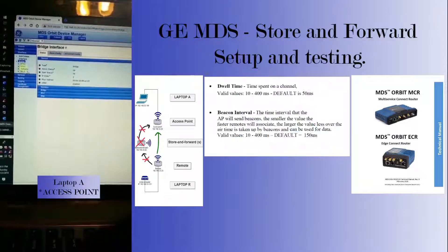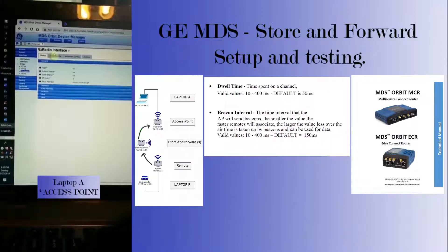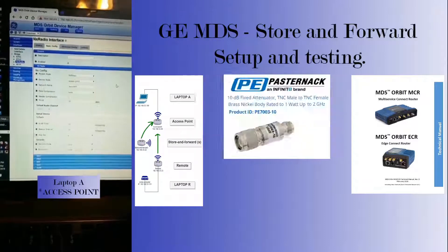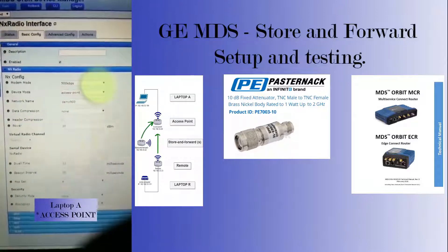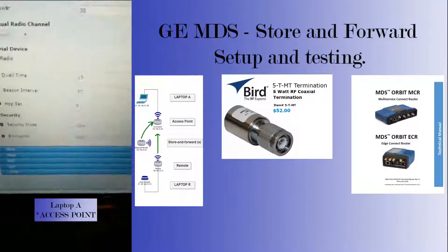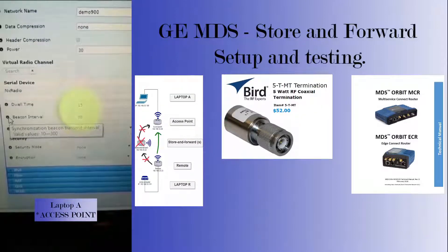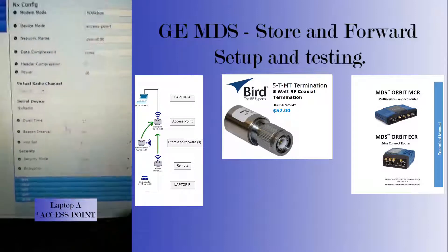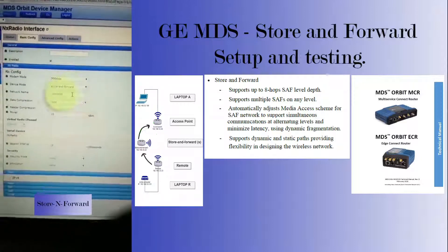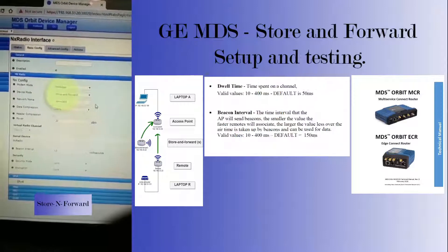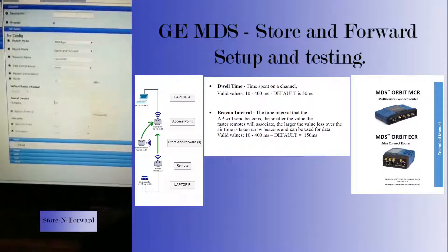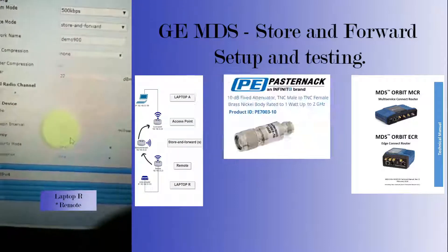Let's set it up. Here's the access point — real quick and easy. Basic config, NX radio. We're configured for 500 kilobits. We've set our wireless network up as demo 900, configured as an access point. I've lowered the beacon to 150, using Hopset A. For the store-and-forward, we've got the same mode speed of 500 kilobits a second, device mode of store-and-forward, our network name, power lowered from the default 30 to 22, and beacon interval lowered from 150 to 15.